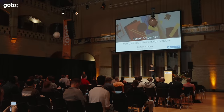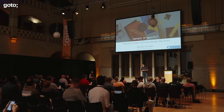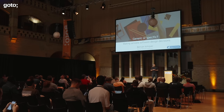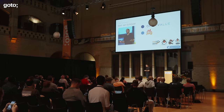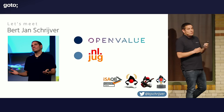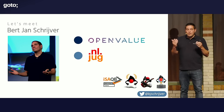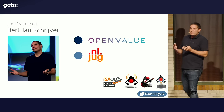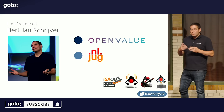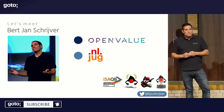Thanks all for coming. For the next 40 to 50 minutes, we're going to talk about making software design decisions, and preferably sensible ones. My name is Bert-Jan Schrijver. I work at OpenValue. I'm also active for the NLJUG, the Netherlands Java User Group. I'm kind of a Java guy, but most of the things I'll mention will apply to other languages just as well.